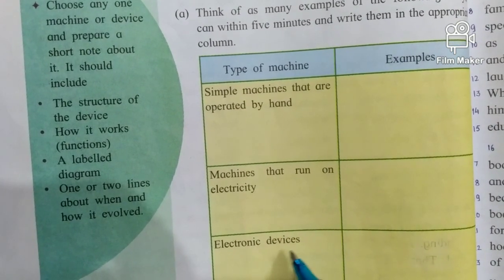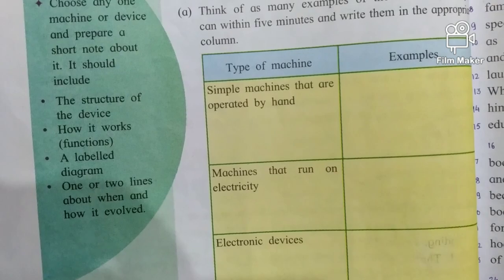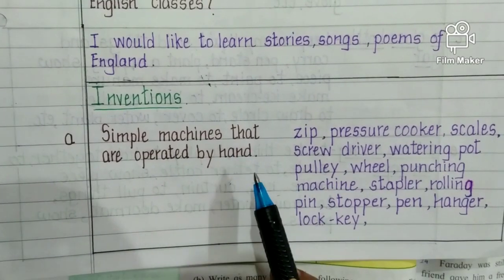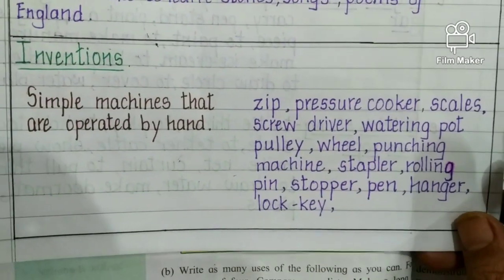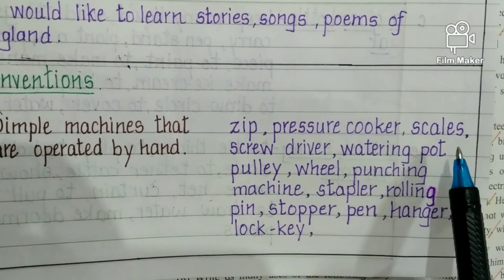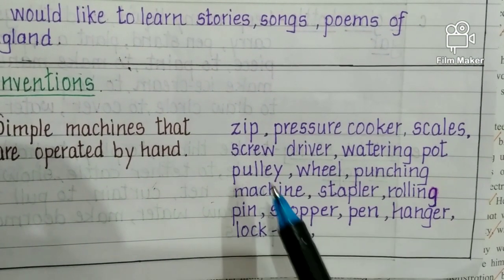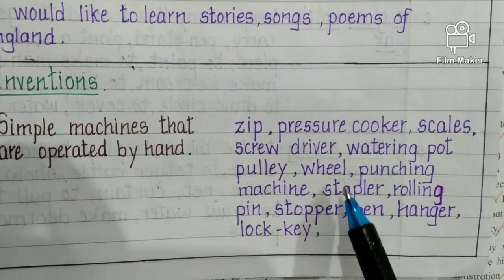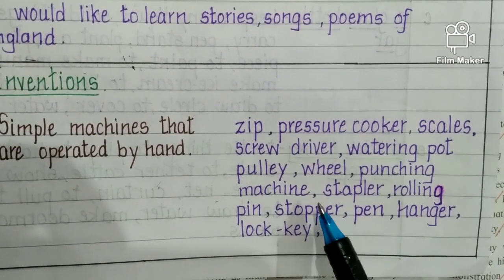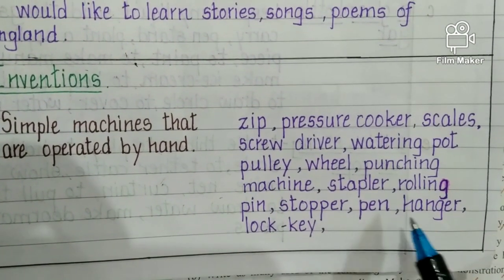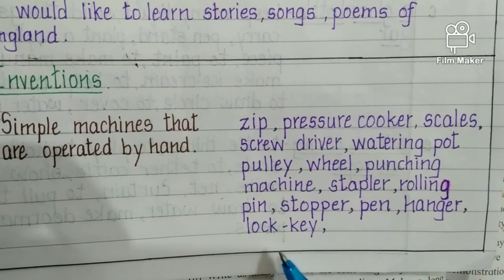The next column is electronic devices. I have written the answers for you. Simple machines that are operated by hand include: zip, pressure cooker, scales (tarazu), screwdriver, water pot, pulley, wheel, punching machine, stapler, rolling pin, stopper, pen, hanger, and lock and key. All these are small machines.